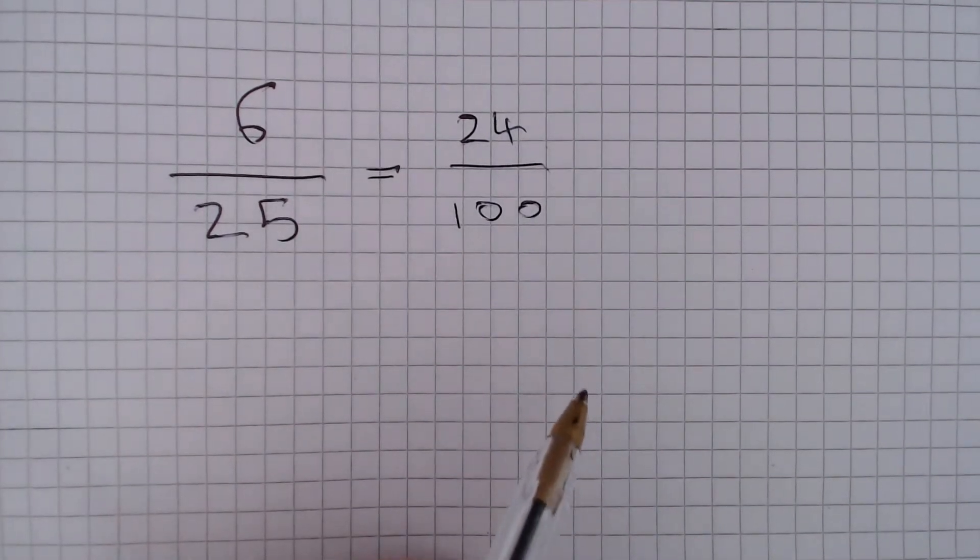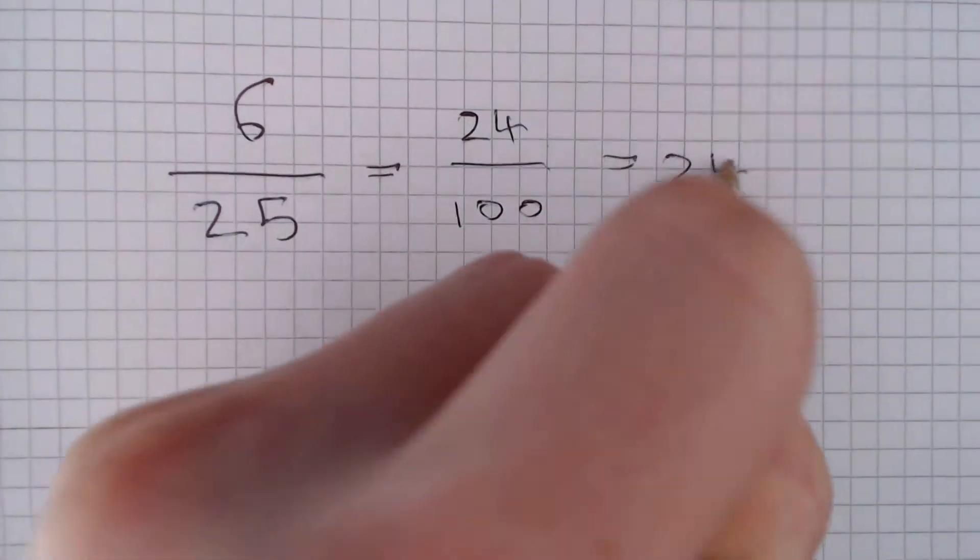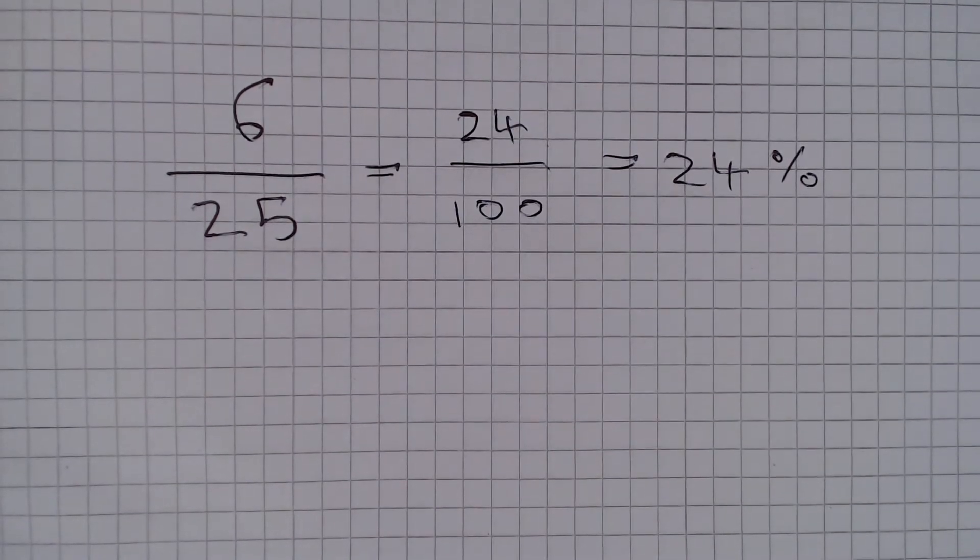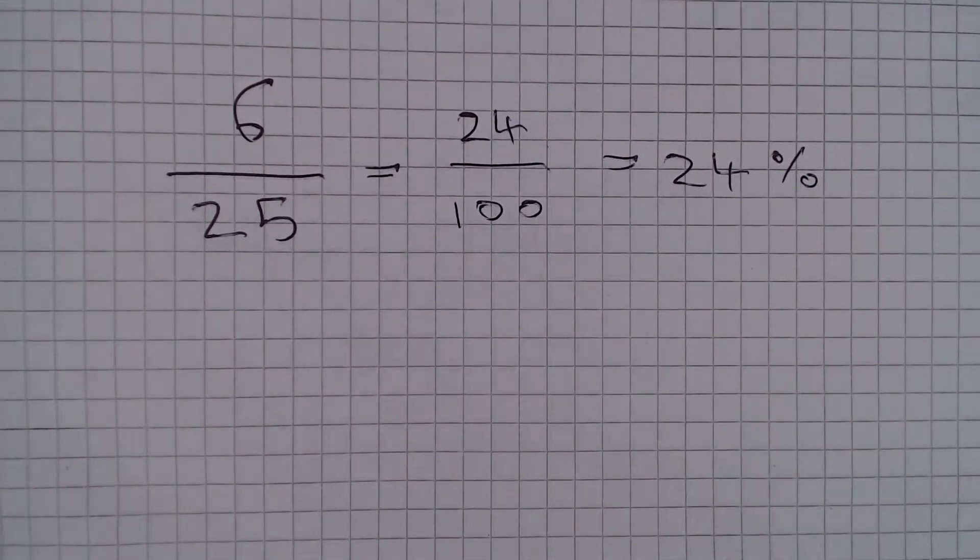And we get 24 out of 100, which is 24%. But the question asks us, what percentage of the time is spent on other subjects?